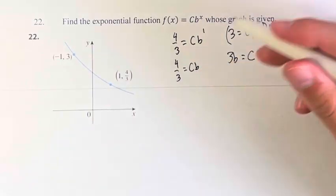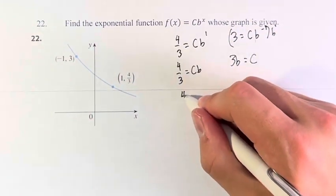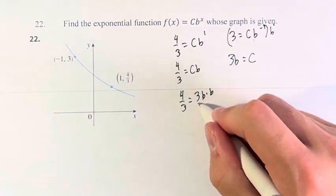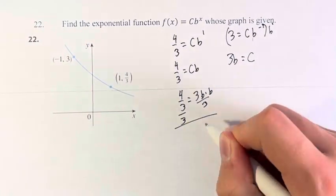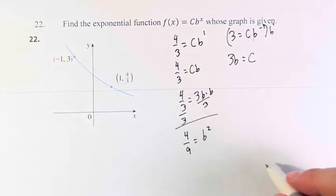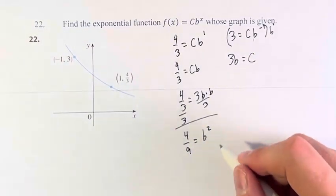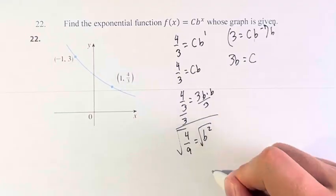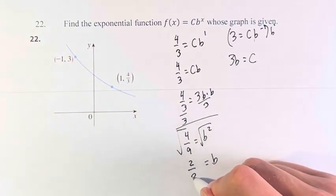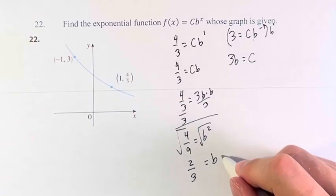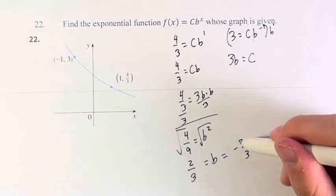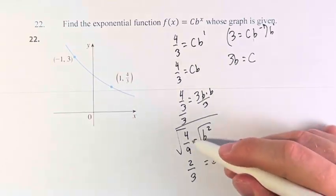And now we can plug in 3b for c. So 4/3 = 3b times b. Dividing by 3, 4/9 = b^2. And therefore, b, if we take the square root of both sides, equals 2/3. Or it equals -2/3, because if you square the negative equivalent, it still becomes the positive square.